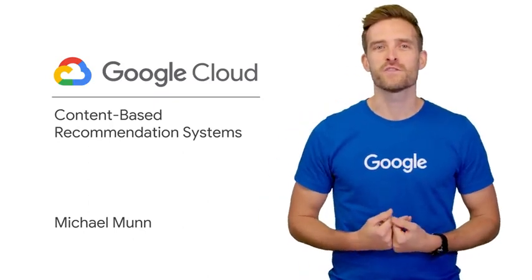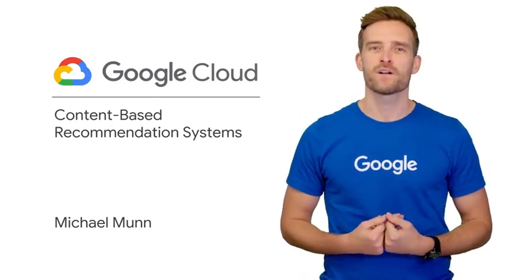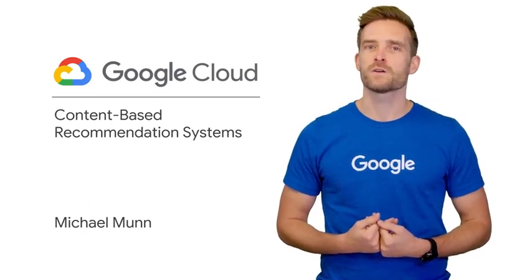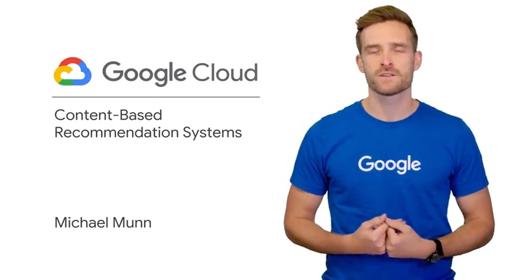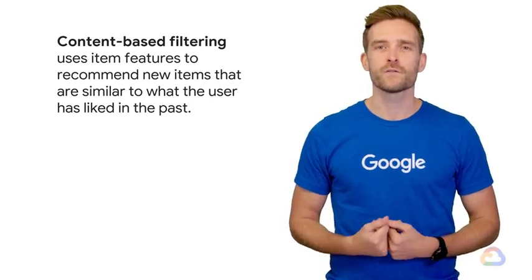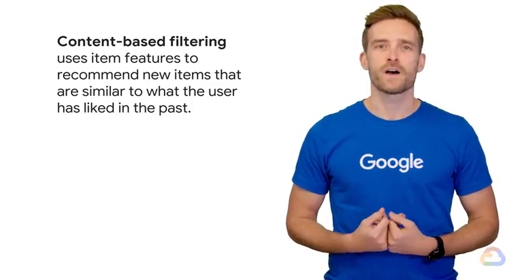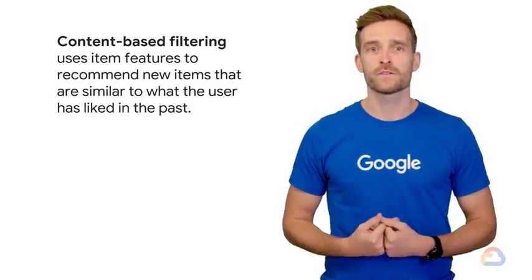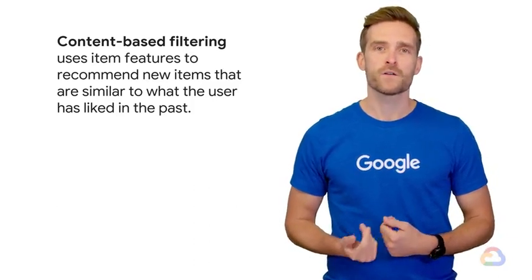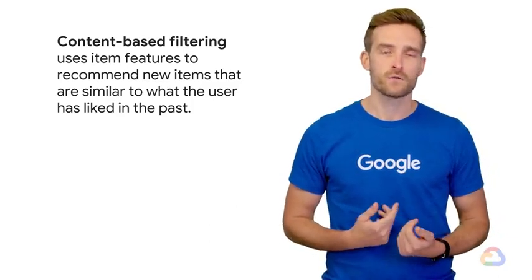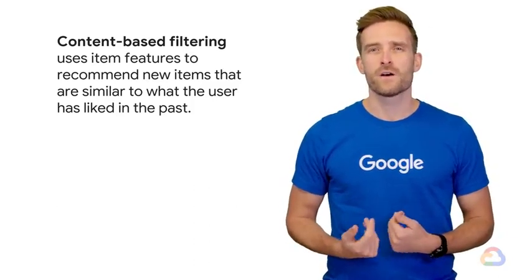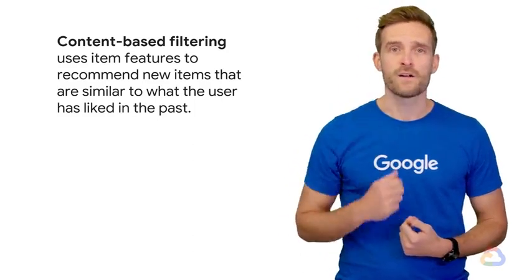In the last module, we mentioned a few common types of recommendation systems. In this module, we'll go a bit deeper in exploring how content-based recommendation engines work. Content-based filtering methods use item features to recommend new items that are similar to what the user has already liked, based on their previous actions or explicit feedback. They don't rely on information about other users or other user-item interactions.